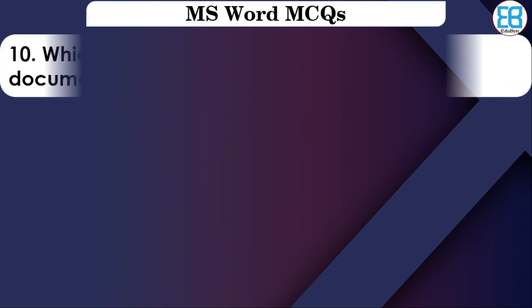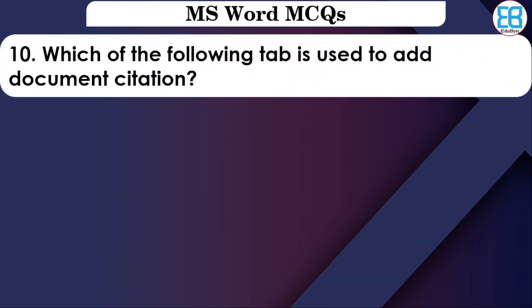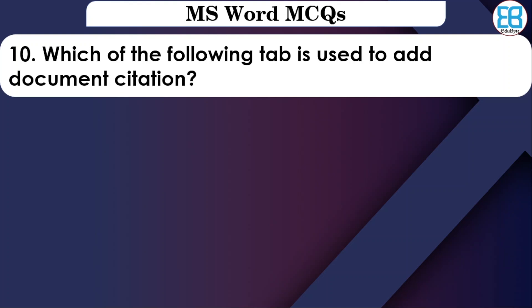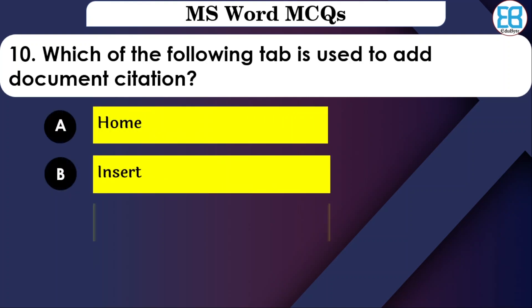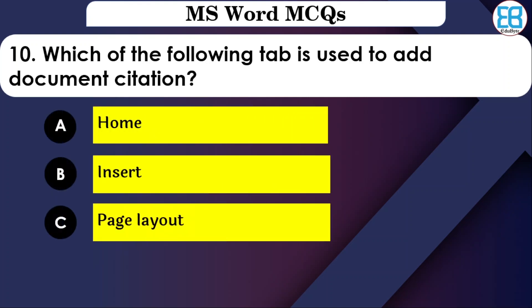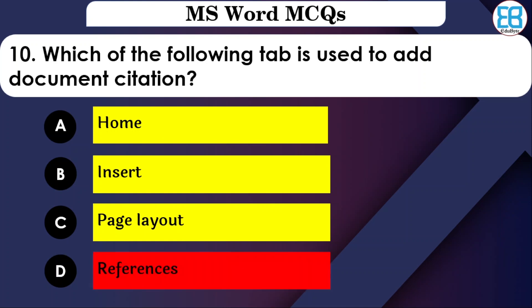Which of the following tabs is used to add a document citation? The options are: Home, Insert, Page Layout, or References. The correct option is References — you use the References tab to add a citation.